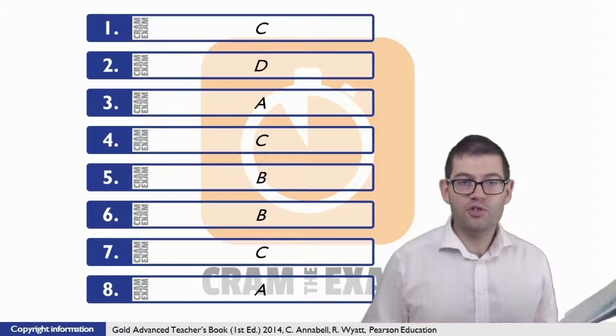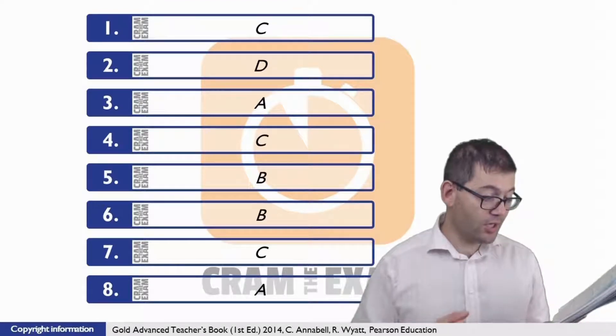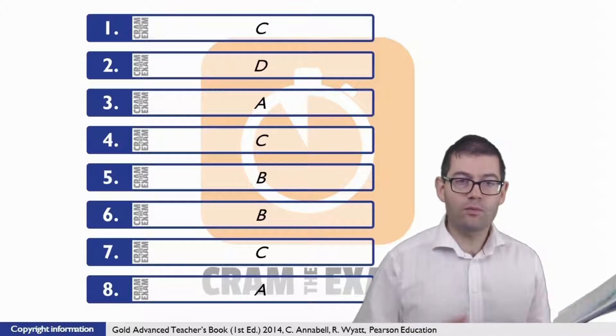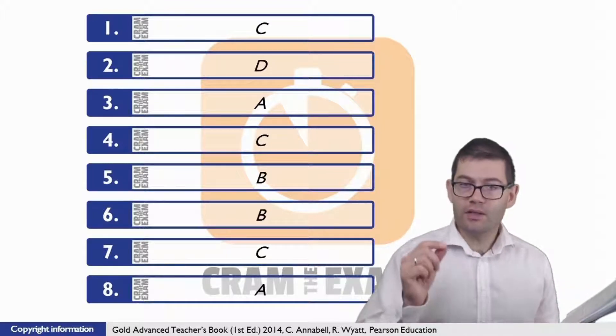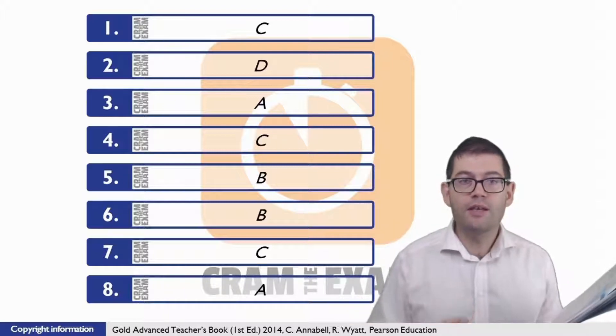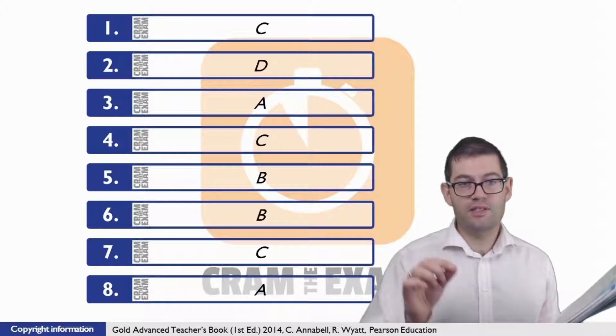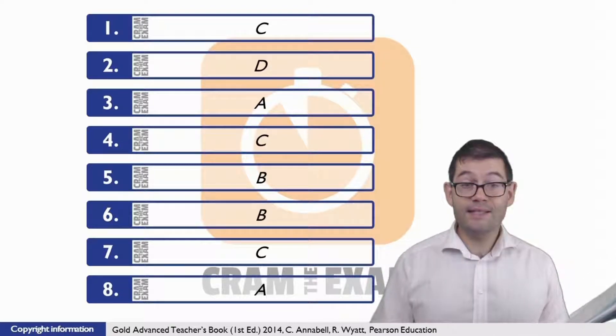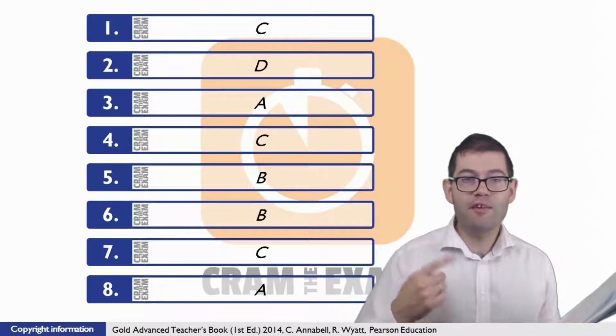For question number two, the keyword here is the adjective beforehand. Perfect can collocate with a few of these options, but given the context which is talking about how well two people suit, there's only one which fits the collocation in terms of context, and that is D: people being a perfect match for each other.